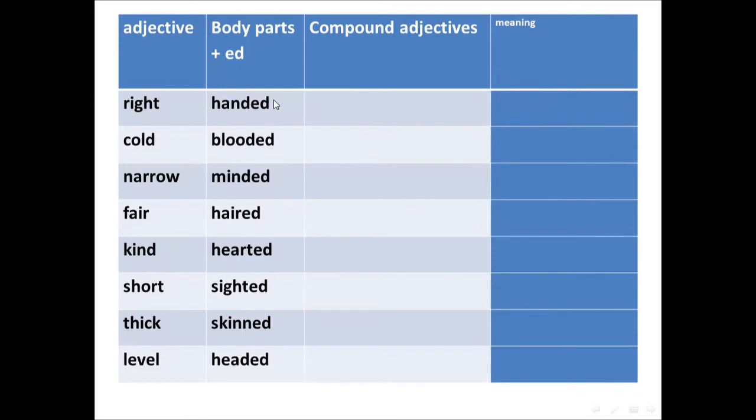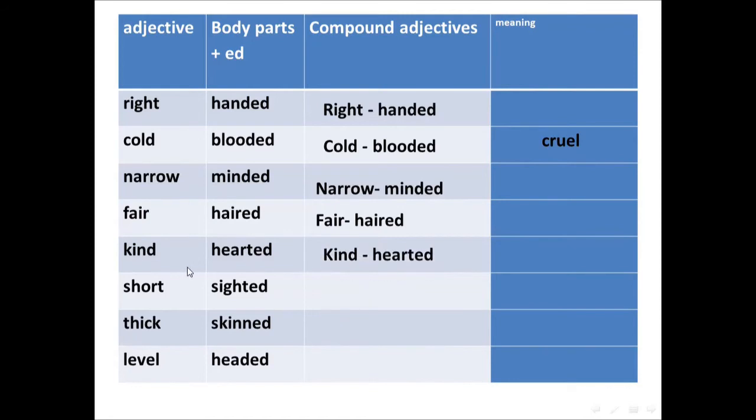Number one, right-handed, that means the person who writes with the right hand. Number two, cold-blooded, and it means cruel. Next, narrow-minded, this person does not accept other opinions. Fair-haired, the person who has blonde hair. Kind-hearted, the person who is kind and generous.